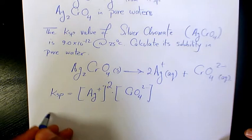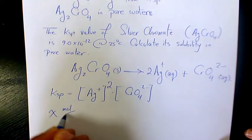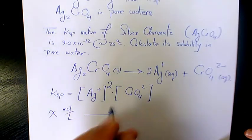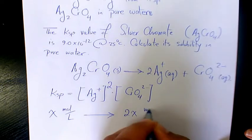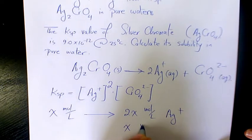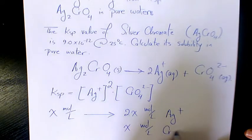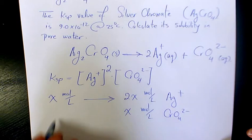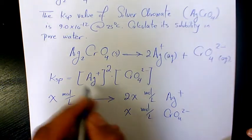Then we can say for x mole per liter solubility of this solid, we're going to produce 2x mole per liter of Ag and we produce x mole per liter of chromate. So when you substitute there, Ksp is 9.0 times 10 to the power of negative 12 equals to...